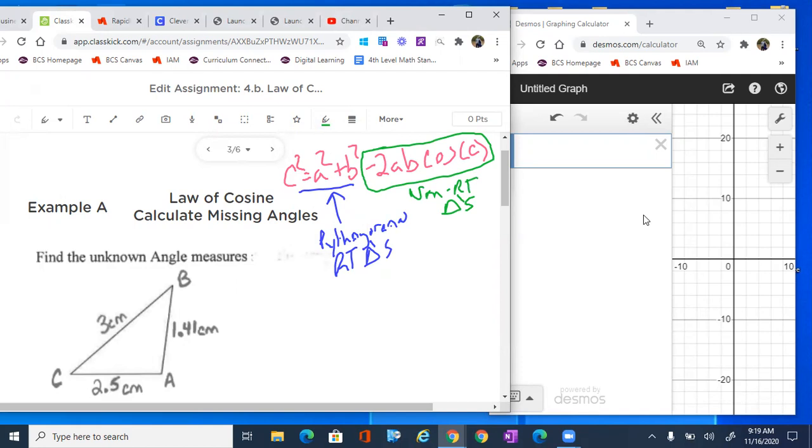So let's go ahead and use this. Find the unknown angle measure. So let's go ahead and start by finding the measure of angle C. Let's start right here and find this angle right here, angle C.